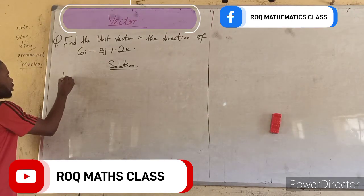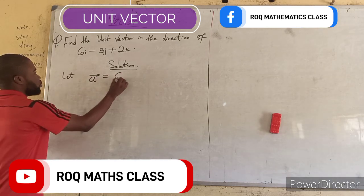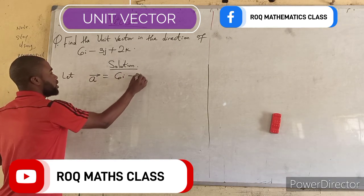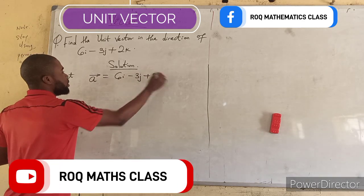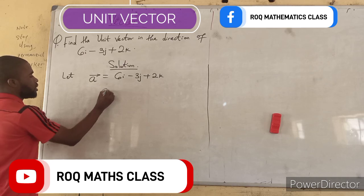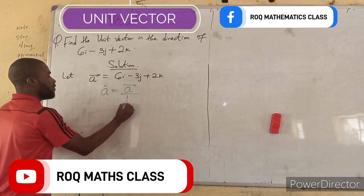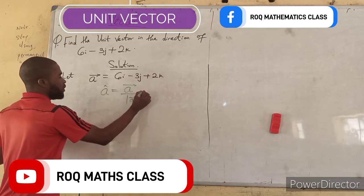Now, just let this vector to be like vector a equal to 6i minus 3j plus 2k. And the formula for unit vector is given as unit vector a equal to vector a divided by modulus of a.